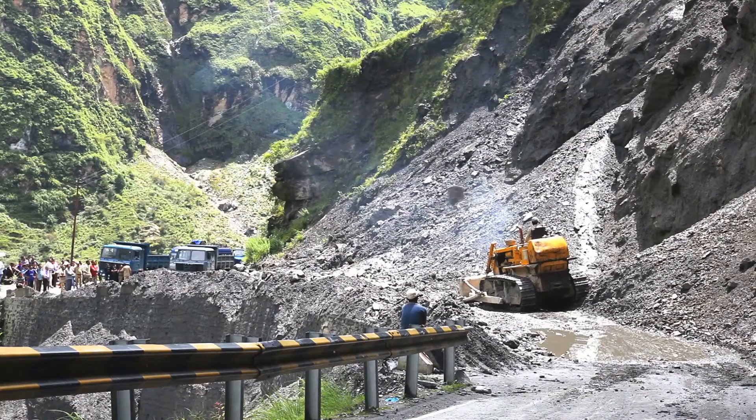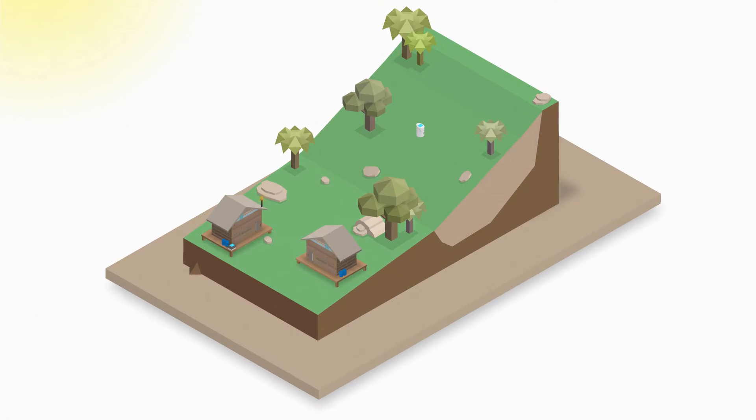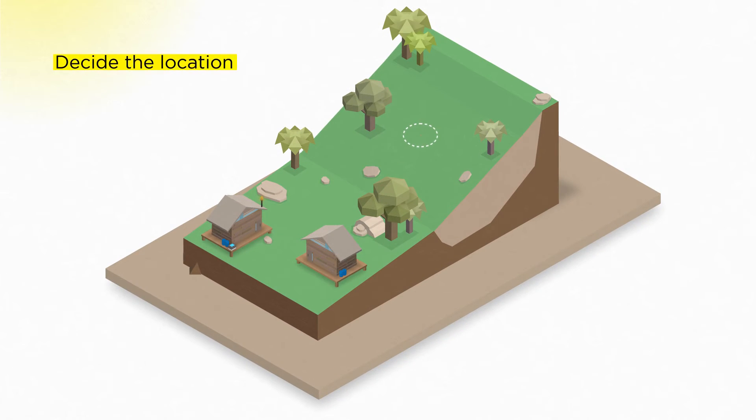Community Slope Safe is a low-cost landslide early warning system operated by local communities at risk from landslides. It's very easy to install.